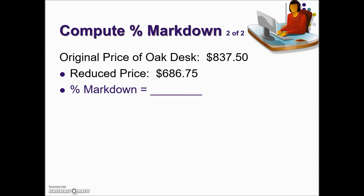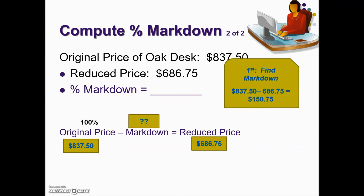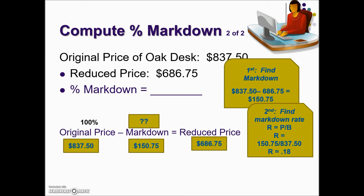In this next example, we're given an original price and the reduced price, similar to the last problem, and we're asked for the percent markdown. Using our foundation formula for reduced price with the original price as the base, we replace those terms with the actual values given. Taking the original price minus the reduced price gives us a markdown amount of $150.75. That is the part; we're looking for the rate using the base of the original price. Taking part divided by base and converting to a percentage, the percent markdown is 18%.